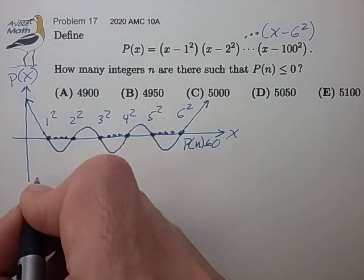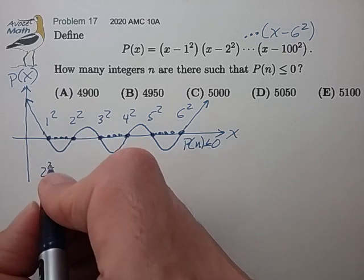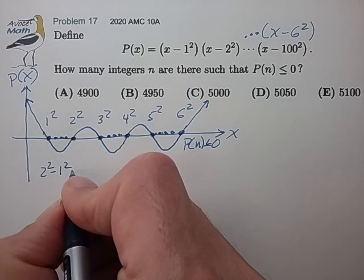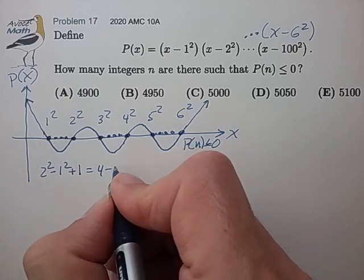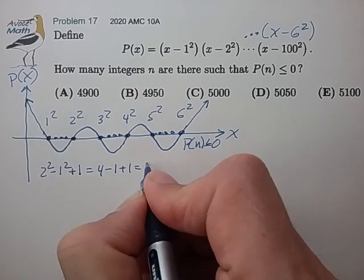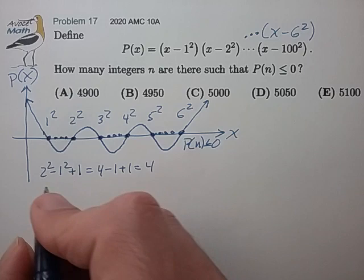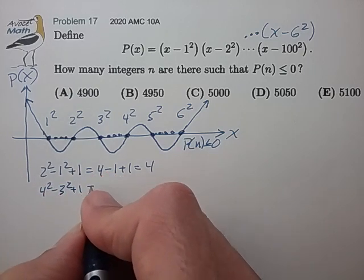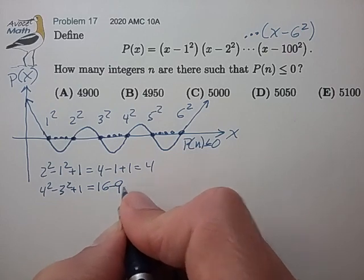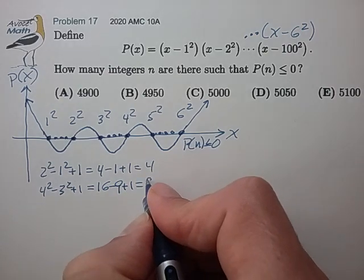So for the first set, we'll have 2 squared minus 1 squared plus the end points. So that's 4 minus 1 plus 1, 4. For the second set, we have 4 squared minus 3 squared plus 1. That's 16 minus 9 plus 1. That's 8.